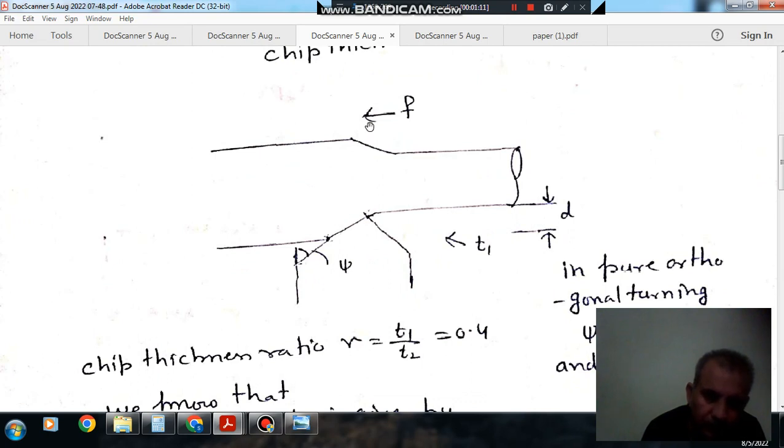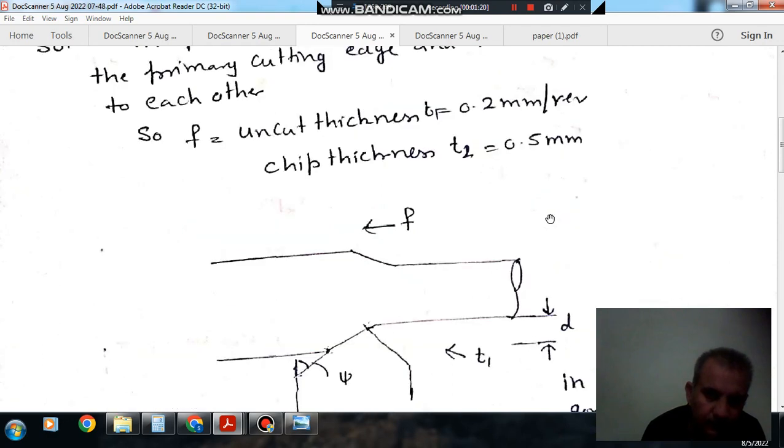So it means if psi is 0, then this is your feed and this is your t1. If this is 0, then feed will be equal to uncut thickness, and this is your depth of cut.